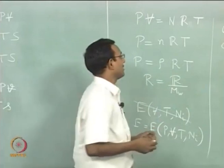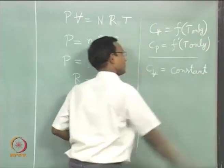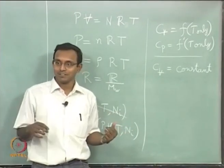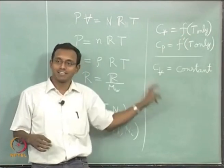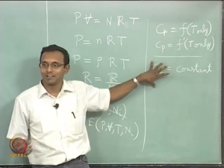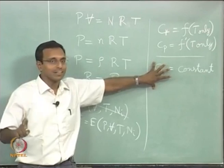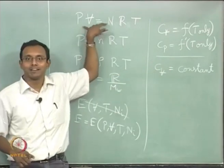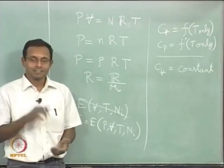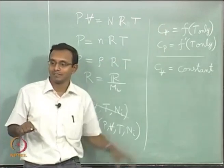Going one step further: if Cv and Cp are constant with temperature — not just any function but a true constant — then the gas is called a calorically perfect gas. When I say calorically perfect gas, both Cp and Cv are constant AND the ideal gas law PV equals NRT is also obeyed. For thermally perfect gas, Cp and Cv are functions of temperature only but not necessarily constant, along with the ideal gas law.